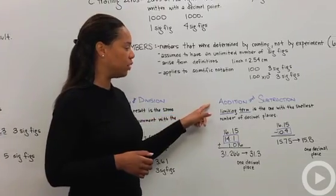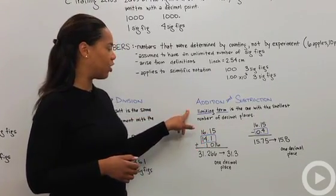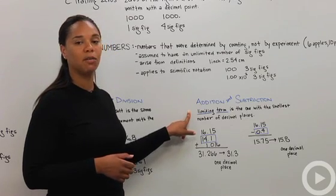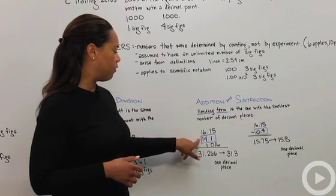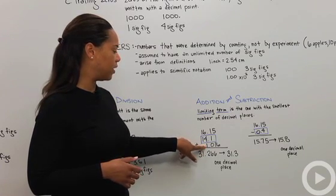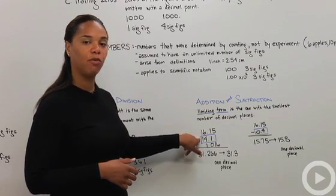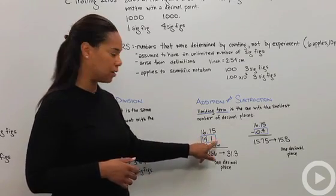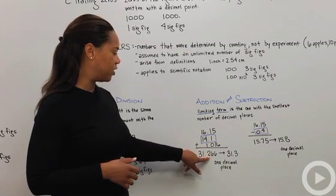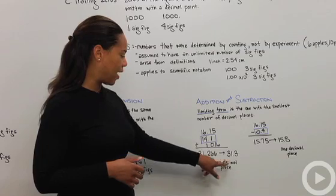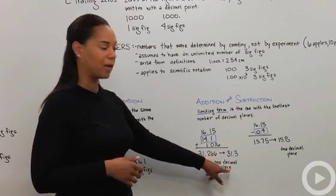So let's lastly do addition and subtraction. It's a little bit different as the limiting term here is the one with the smallest number of decimal places. So if I had 16.15, 14.1, and 1.06 and I'm adding them together, I'm going to be limited by 14.1 because it only has one decimal place. So then my answer on my calculator would become 31.266 and I would round that to 31.3 because again, I'm limited in my answer by the one decimal place.